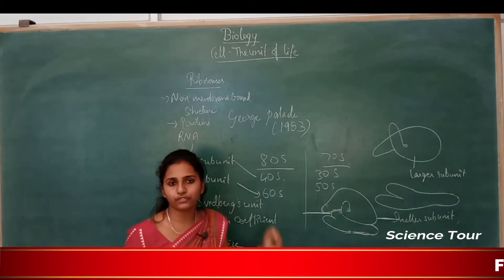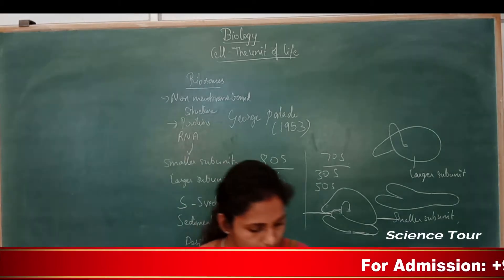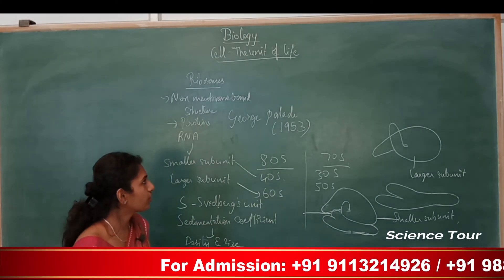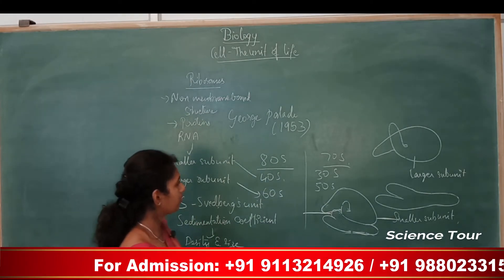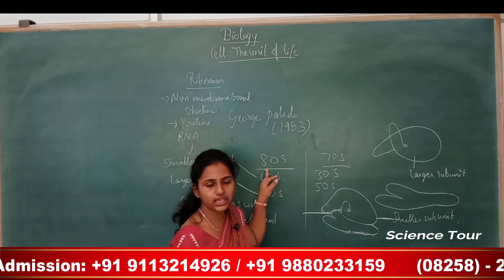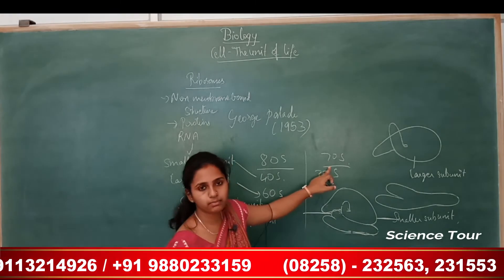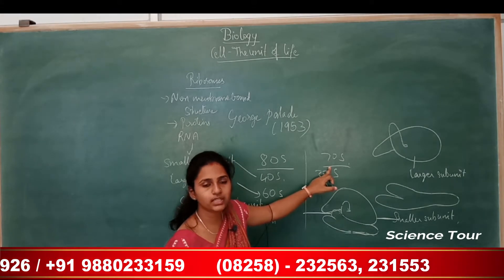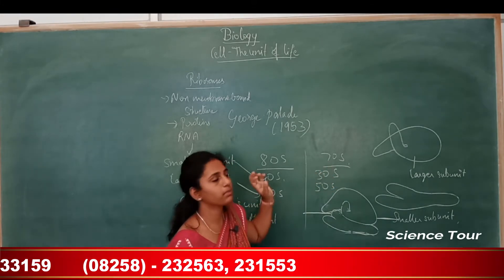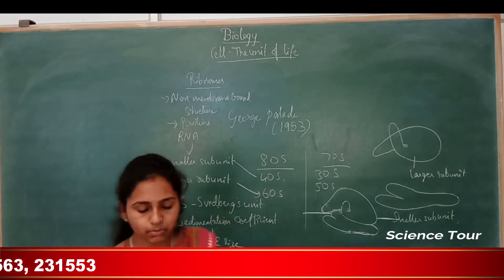The main function of the ribosome is protein synthesis. In eukaryotes, you can see 80S type of ribosome. In prokaryotes, you can see the 70S type of ribosome.